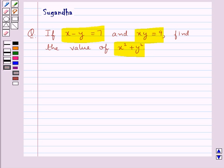Before moving on to the solution, let's recall the identity: a minus b whole square is equal to a square minus 2ab plus b square. We take this as the key idea to be used in this question.